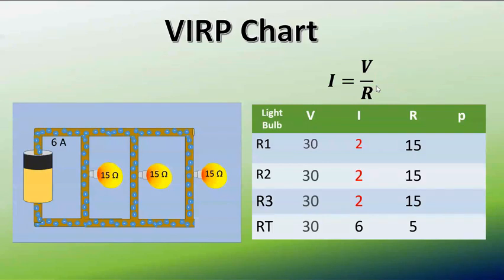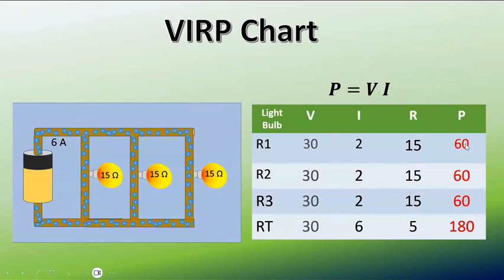Last thing for us to do is find the power, and the power is just voltage times current. So V times I will give us all these values, and then we add these three values up to make sure that we got the total. 60 plus 60 plus 60 is equal to 180, and that just lets us know that we're doing things correctly. And then there we've solved for anything we want to know about this parallel circuit. Hopefully this helped and I'll see you on another video.